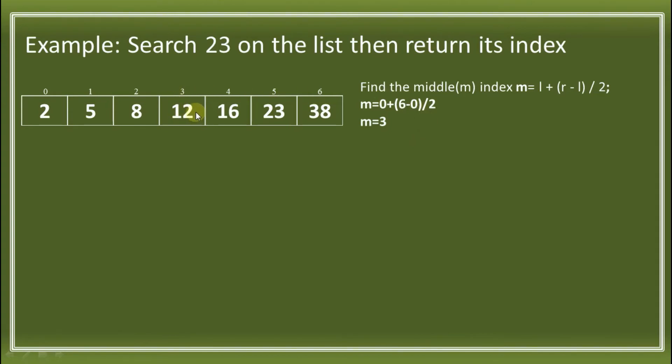Here, we're going to ask if that is 23. If list[m], the middle index, equals the key which is 23, then return m index which is 3. Else, if list[m] is greater than the key, we'll search the left part. Else, we'll search the right part. Because list[m] is not equal to key, we ask: is list[m] greater than key? Is 12 greater than 23? That is false. So we go to else.